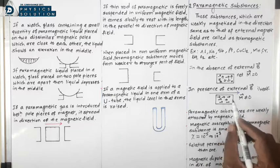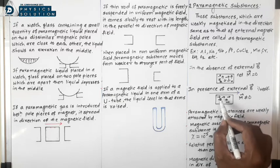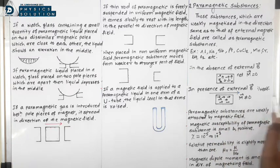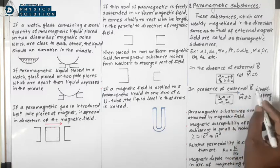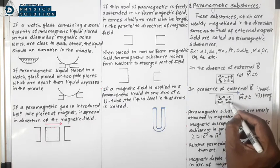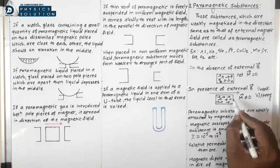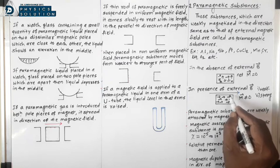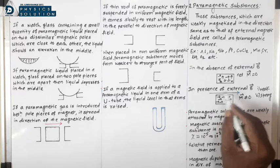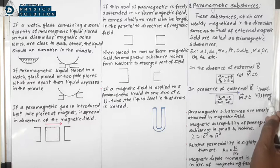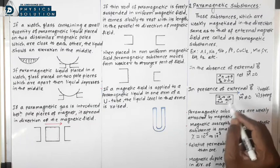When we apply an external magnetic field, almost all atomic dipole moments align themselves in the same direction as that of the external magnetic field. So we can say paramagnetic substances are weakly magnetized — if the external magnetic field is weak, they are weakly magnetized; if it is strong, they are strongly magnetized.